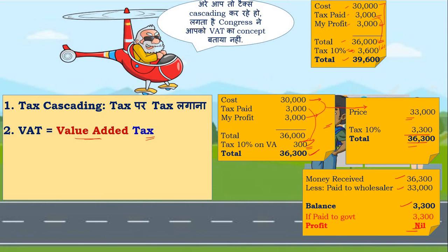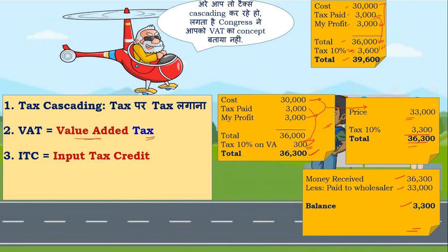To solve this problem, the concept of ITC — Input Tax Credit — was introduced. Whenever a shopkeeper buys goods and pays tax on them, the government credits that amount to their account, meaning it is acknowledged that this much money is already deposited. Later, when the shopkeeper sells goods with value addition, tax is calculated on the full amount (cost plus value addition), but at the time of payment, the input tax credit already in the account is deducted and only the balance is paid.